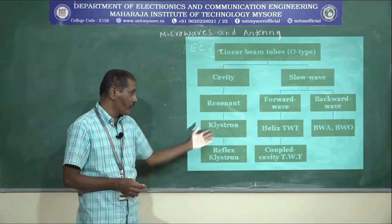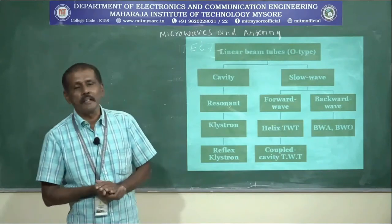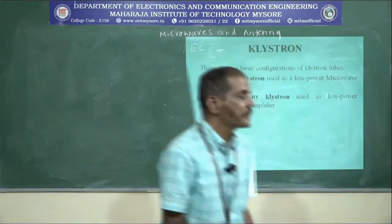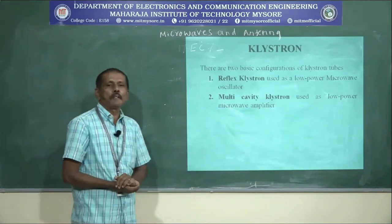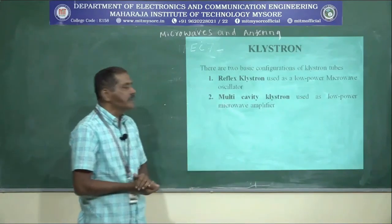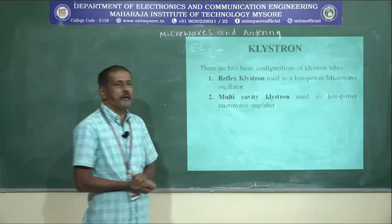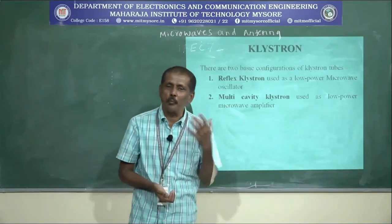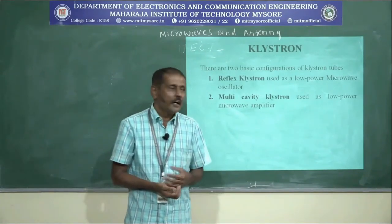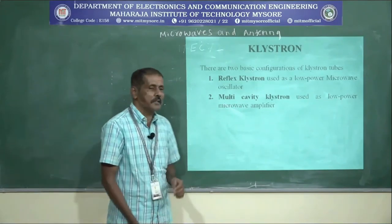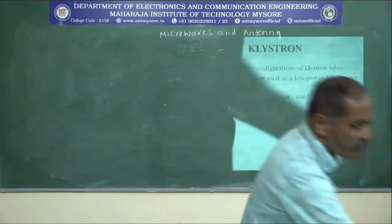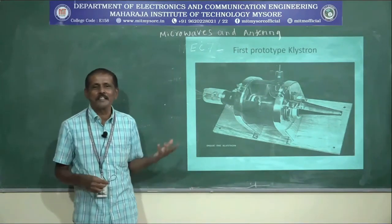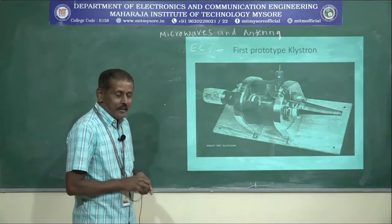Let us see how the klystron and reflex klystron function and how they generate microwave signals. There are two basic configurations: the reflex klystron, used as a low-power microwave oscillator, and the multi-cavity klystron, used as a low-power microwave amplifier. Let us look at some photographs of these microwave devices.